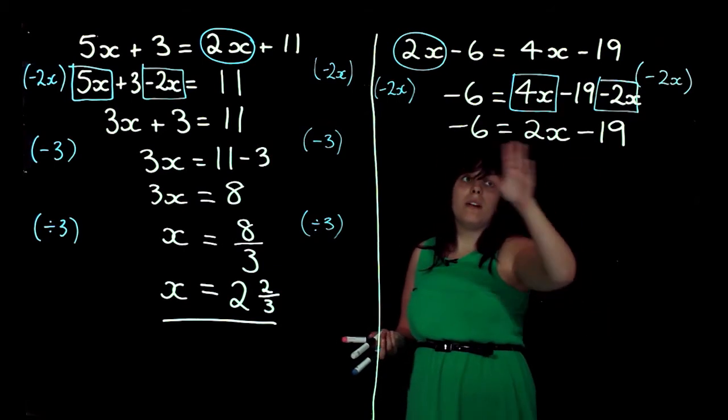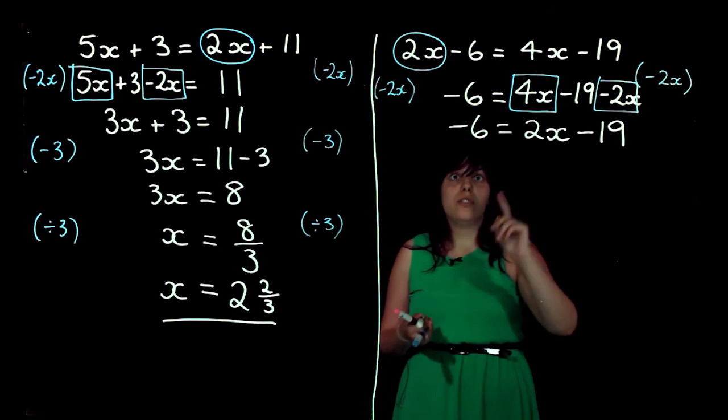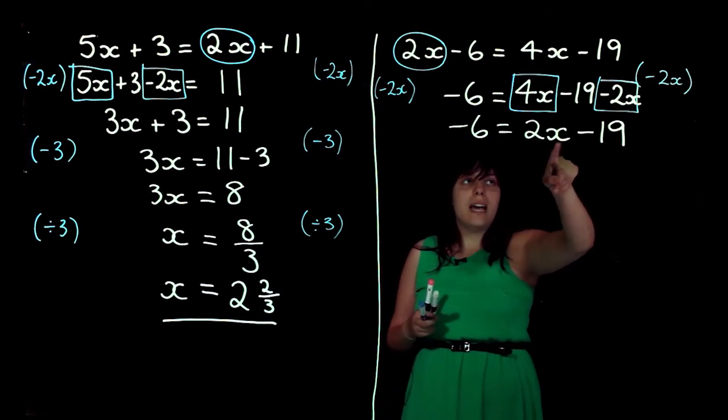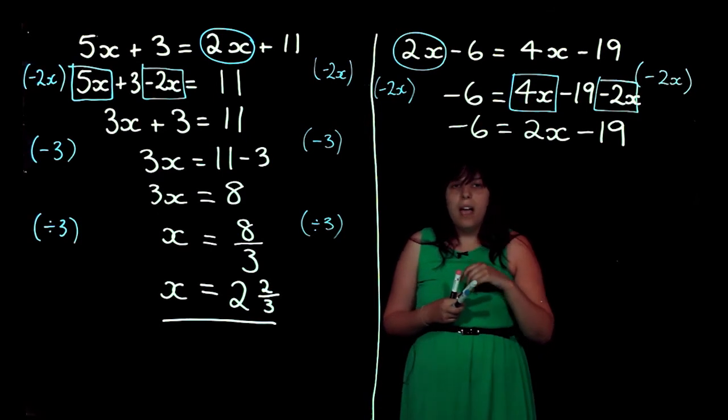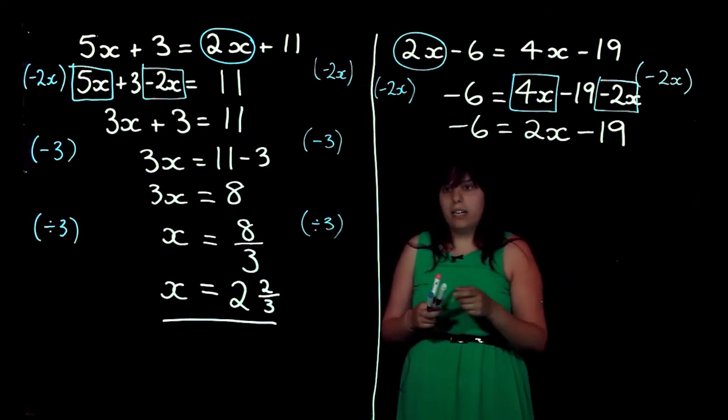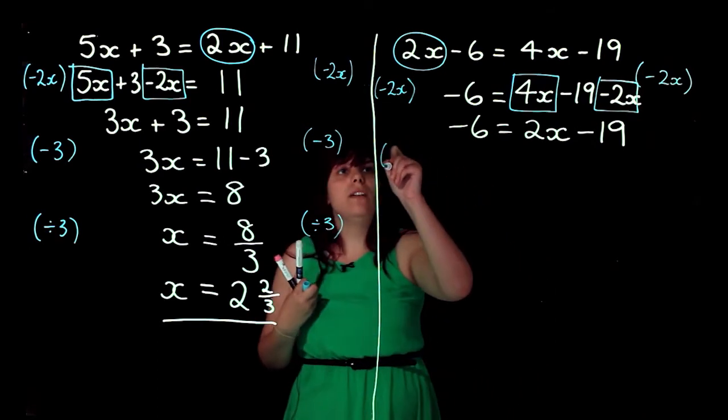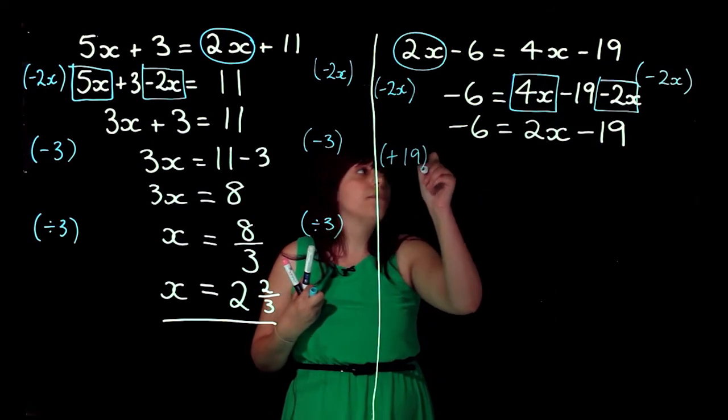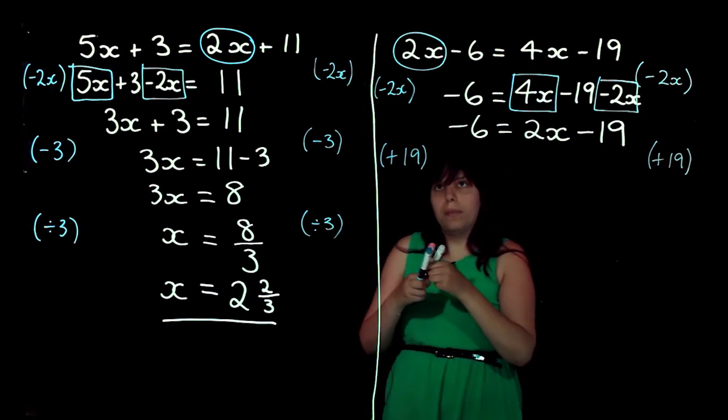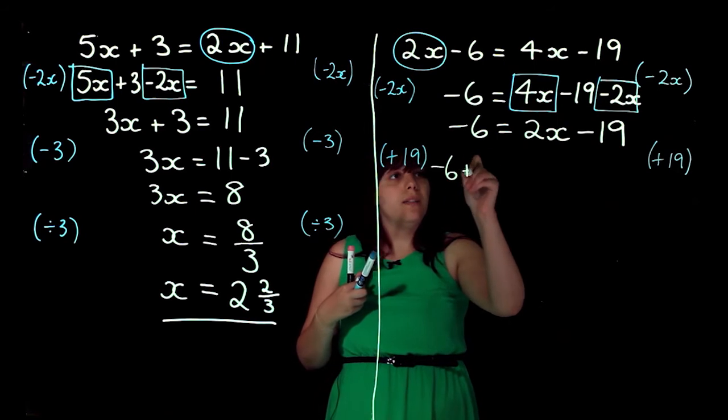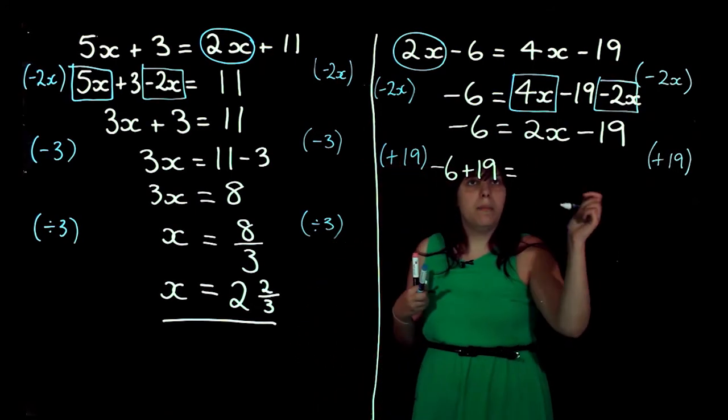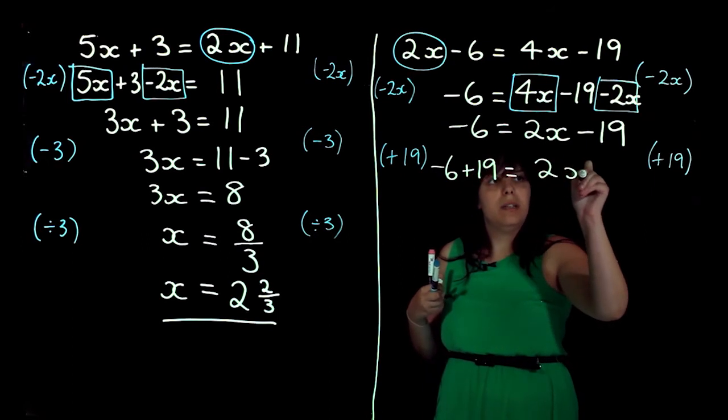We don't have to worry about the fact it's on the other side at the moment. So, I've got 2 times x, and then I'm taking away 19. How do I get rid of that minus 19? I'm going to add 19. So, if I add 19 to both sides, I'm going to end up with minus 6 plus 19. And 2x minus 19 plus 19 is going to be 2x.